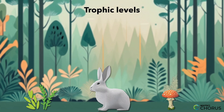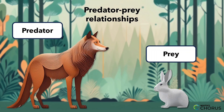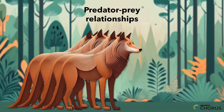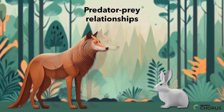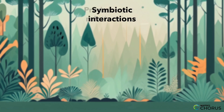Now let's look at predator-prey relationships. Imagine a world where hunters and the hunted must find a delicate balance for survival. These relationships are crucial — too many predators and the prey population suffers; too few and the ecosystem is thrown off balance.